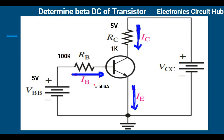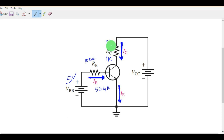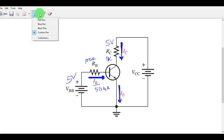You have been given the base current IB which is 50 microampere. So you have only two parameters. By using these two parameters, let us solve the problem and find the value of beta DC. You have the voltage drop across RC which is 5 volts, and you have the base current IB.